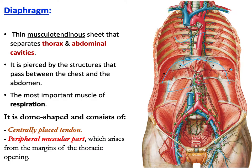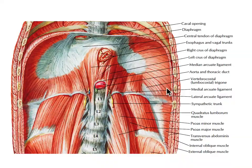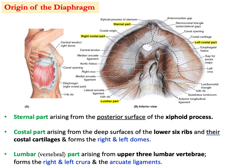The diaphragm is a dome shape. It consists of a central part, which is mainly tendon, and a peripheral muscular part. The muscular part arises from the margin of the thoracic opening — from the ribs and costal cartilage and other structures. So the muscular part arises from the margin of the thoracic opening, and we will talk in detail about the origin of the diaphragm.